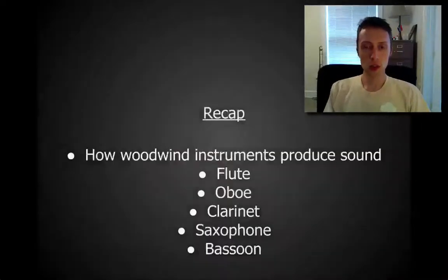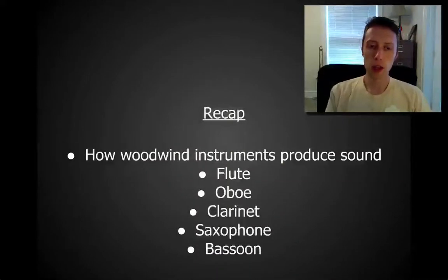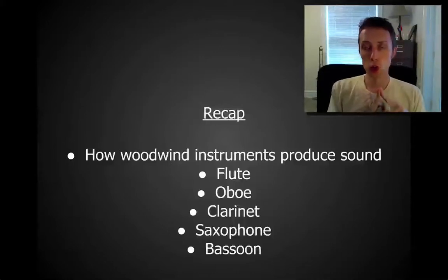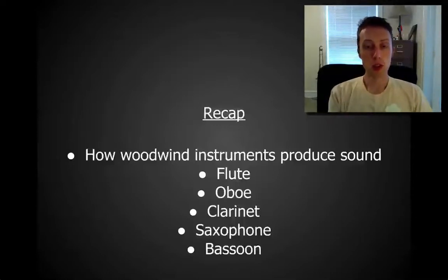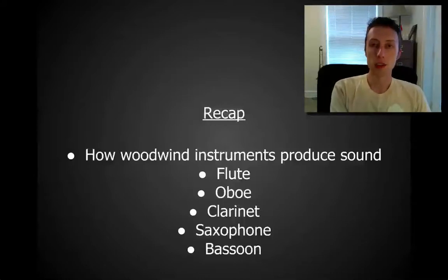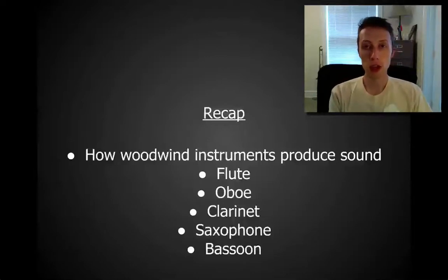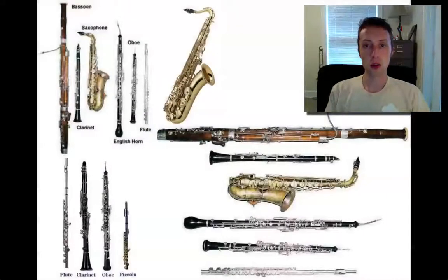That is woodwind instruments. Just to recap what we talked about today: we talked about how woodwind instruments produce sound, which is either blowing over a tone hole to produce a vibration or blowing over a single or double reed. We also talked about the flute and piccolo, the oboe and the English horn, the clarinet and the bass clarinet, the saxophone family, and the bassoon and contra bassoon — the bass woodwind instruments. That is it for our woodwind instruments for today. Up next is going to be the other families of instruments, so I'll see you next time.